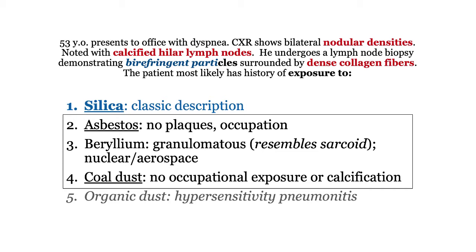Looking at the other options: for asbestos, you'd expect pleural plaques and an appropriate occupational history, neither of which is offered. As for beryllium, it is a granulomatous disorder associated with work in the aerospace industry — I've never seen a beryllium question on boards. For coal dust, there is no occupational description and it is not associated with lymph node calcification. Organic dust, by contrast, is associated with hypersensitivity pneumonitis, which will be covered in another video.